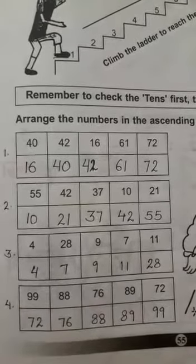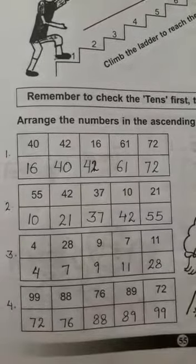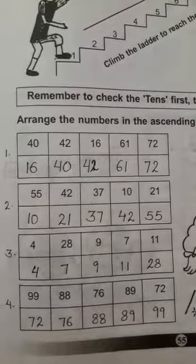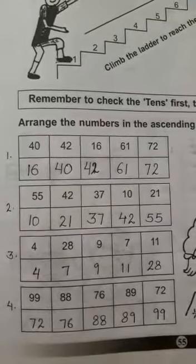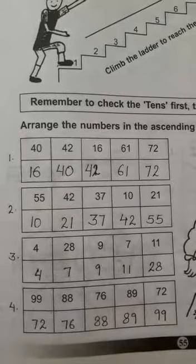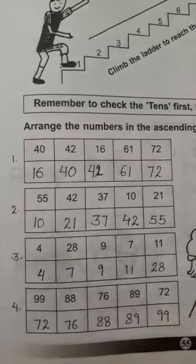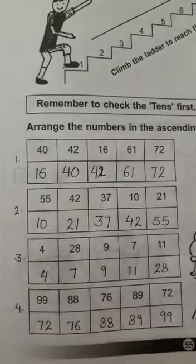Next, comparing 61 and 72, we have 6 and 7 at the tens place. Since 6 is less than 7, our next number is 61, and the last number is 72.